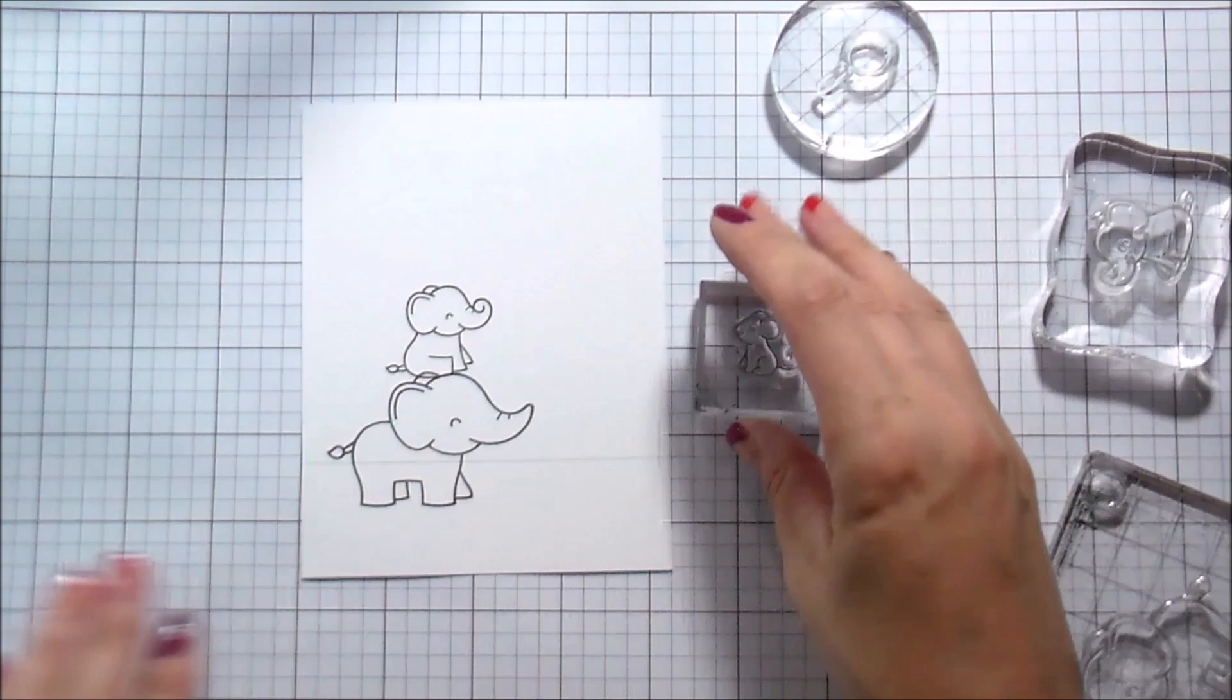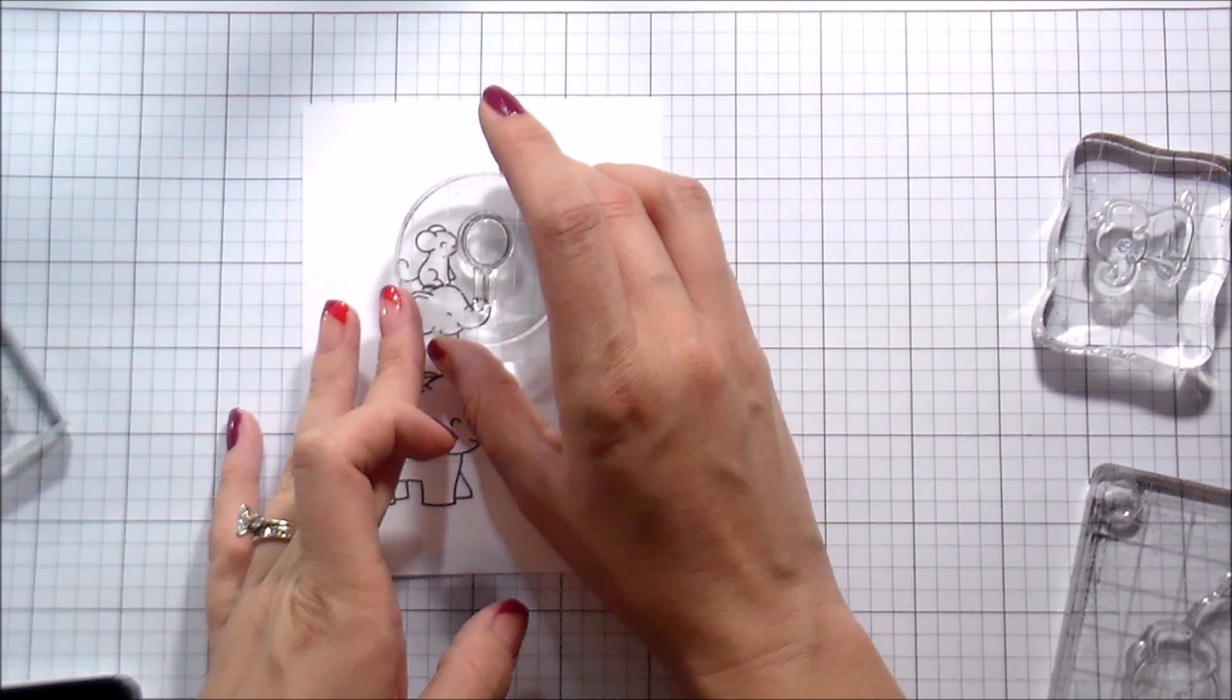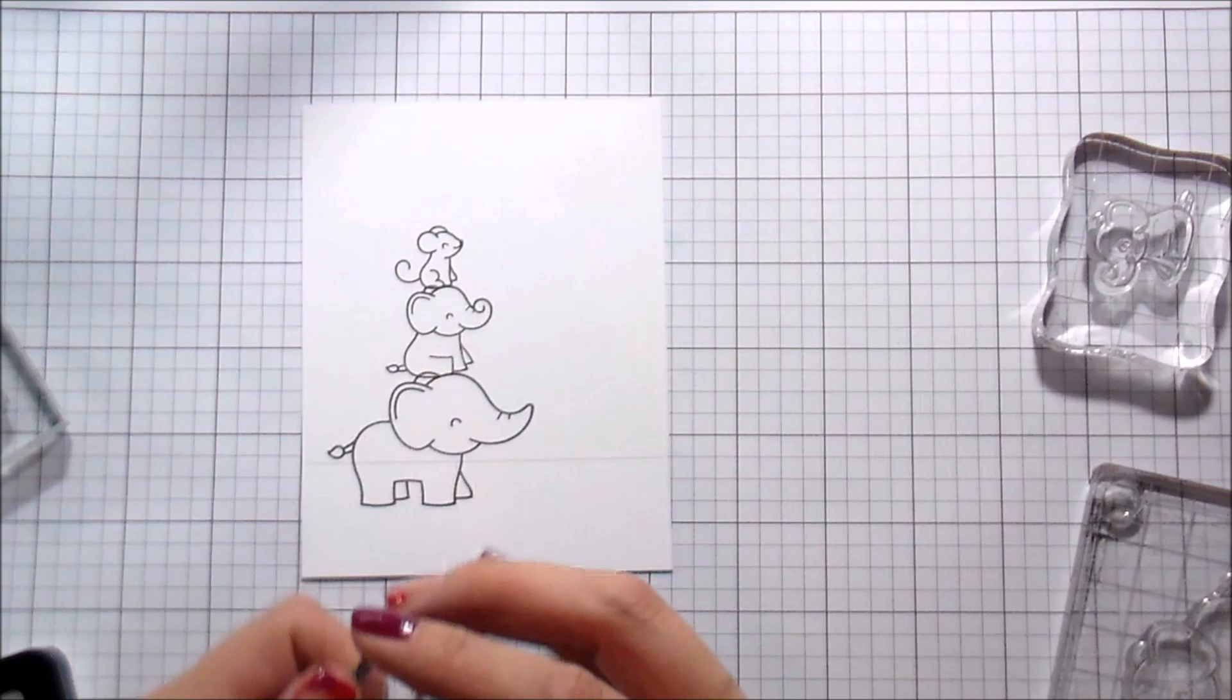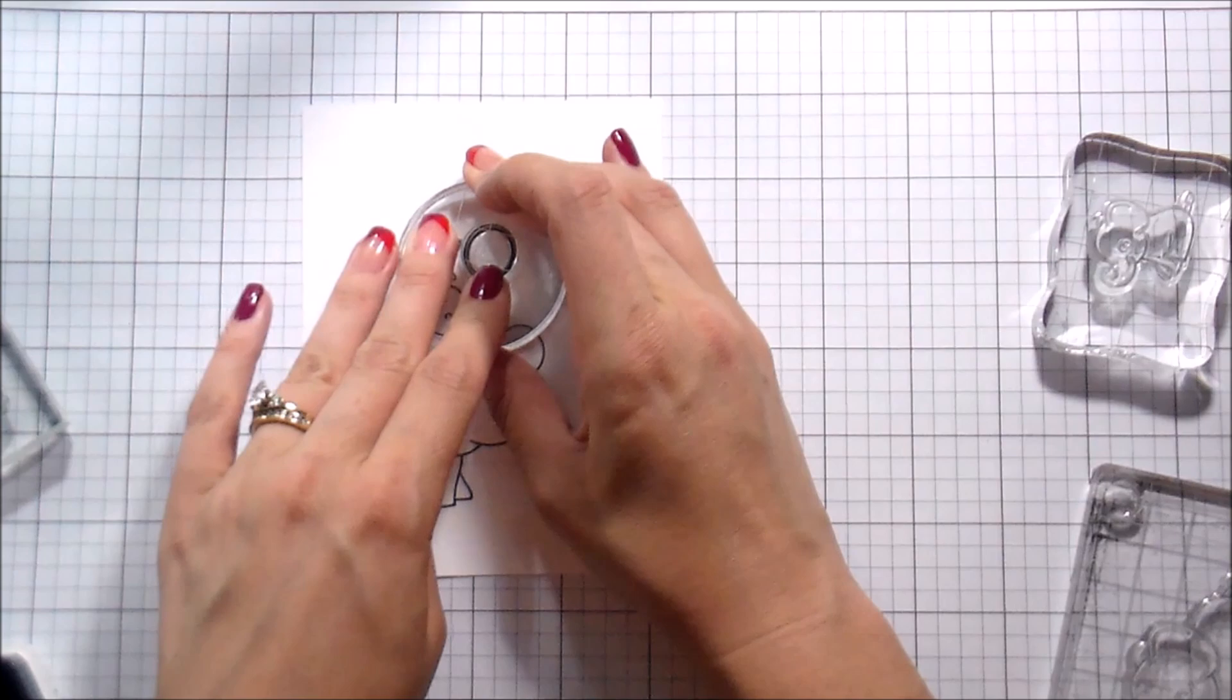So I'm going to stamp that down just slightly lower than that line. I want to make sure I have plenty of room to stack my characters up. I'm not masking them because I'm going to be die cutting the images out. I'm only stamping them here so that I can get a look at how my layout's going to be, and I need to see how far up I need to take my color.